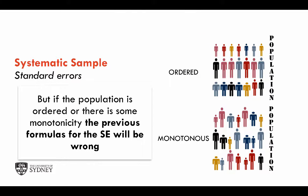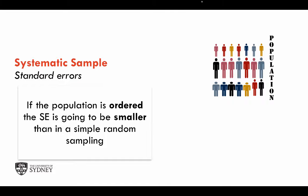An example of monotonicity in the population would be the case of surveying patients admitted to a hospital where there's clearly a dependence on the day of admission, at least weekends versus weekdays. This pattern would have an impact on the way we calculate the variability of the estimators expressed in the standard errors. Typically, if the population is ordered, the standard error of estimates computed from samples drawn in a systematic way is going to be smaller than under a random sampling scheme. To understand intuitively why, let's remember what the standard error is — the standard deviation of estimates computed across different samples from the population.